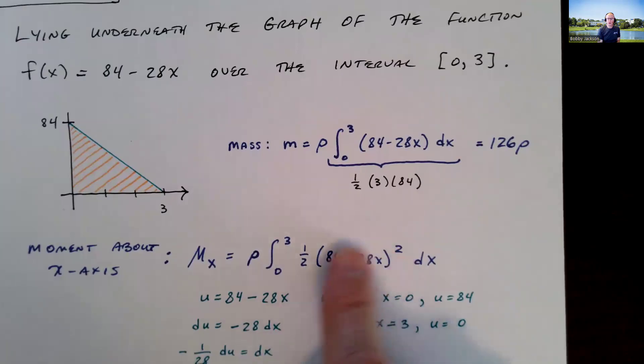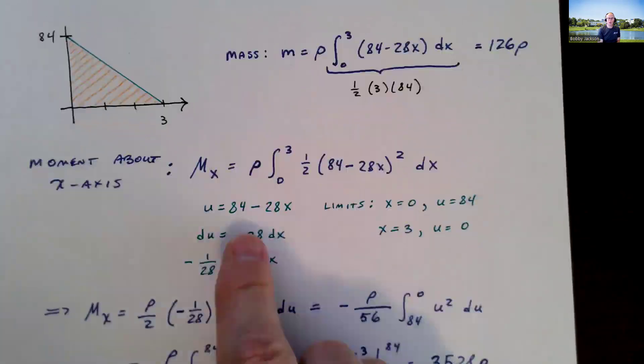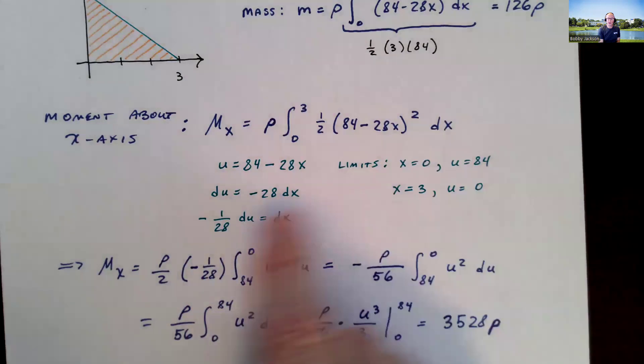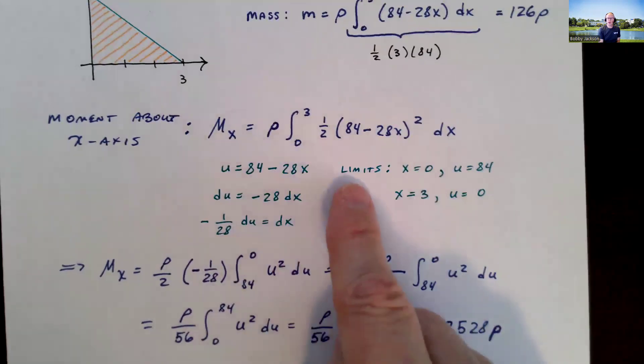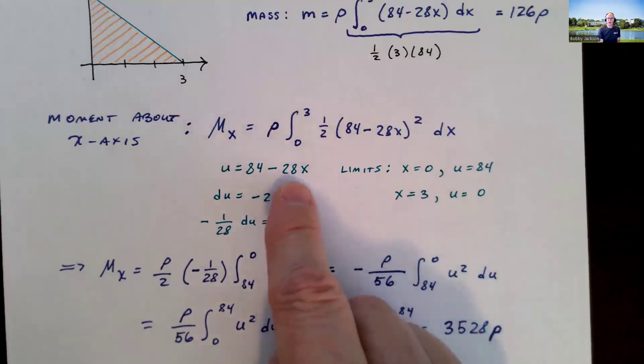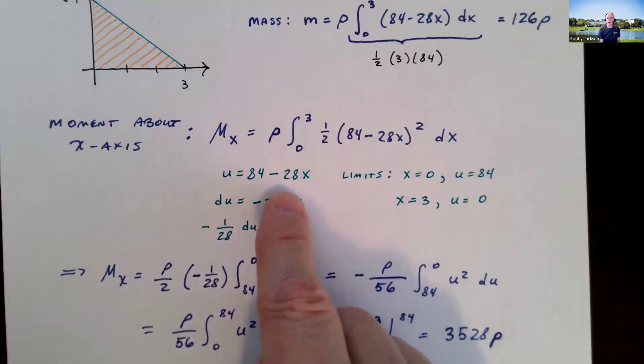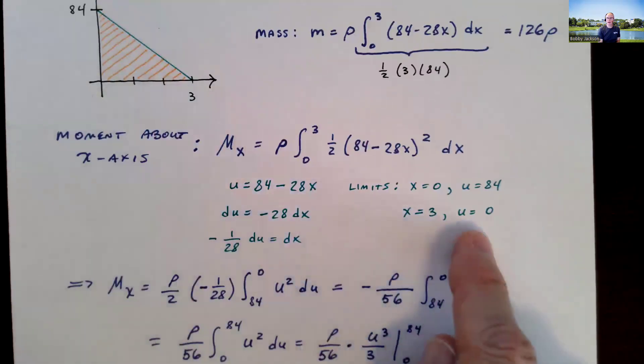You could foil this out and just do the integration that way. I'm going to do a simple u substitution. U is 84 minus 28x. So my du is negative 28 dx. I have this relationship between du and dx. I'm going to replace the dx with this. This will be u squared. And then I do need to change my limits. When x is 0, u is 84. And when x is 3, it turns out 28 times 3 is exactly 84. That's why the graph is on the x-axis at that point.